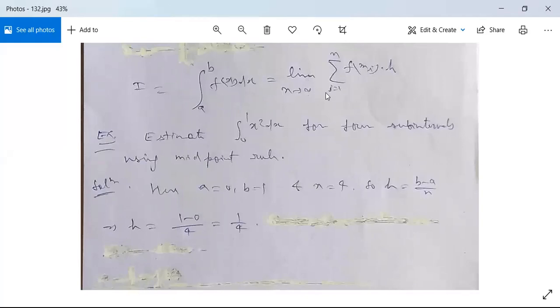Summation i equals 1 to n of f(mᵢ) times h. The summation from i equals 1 to n, and limit n tends to infinity. Let's see an example to make this clear.